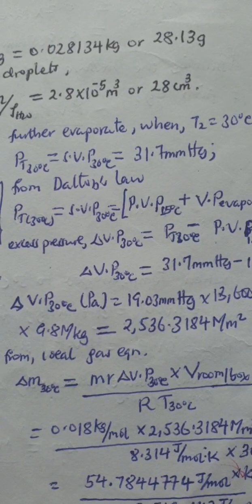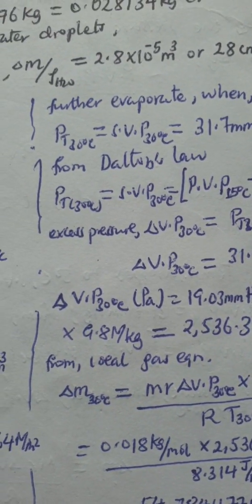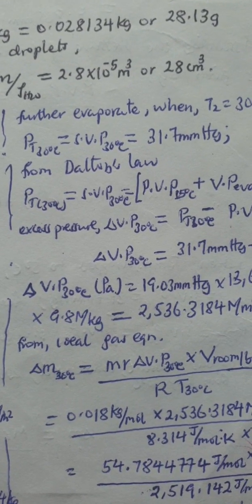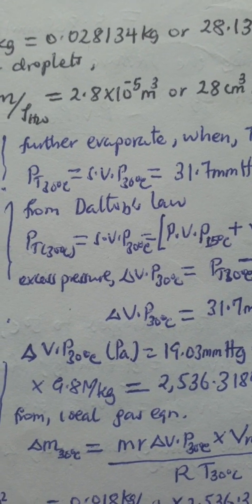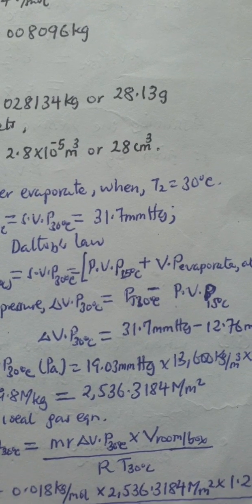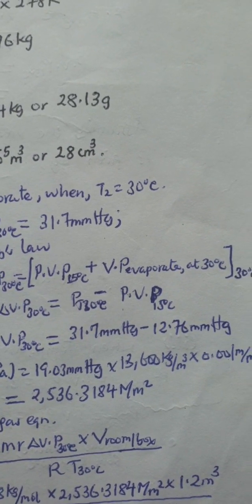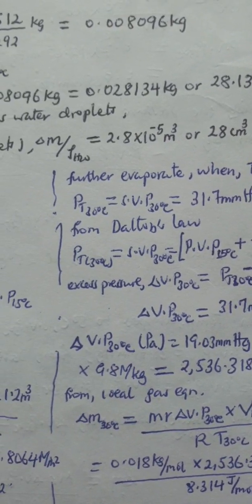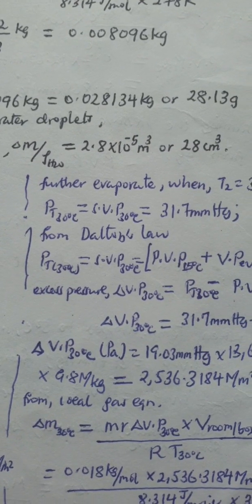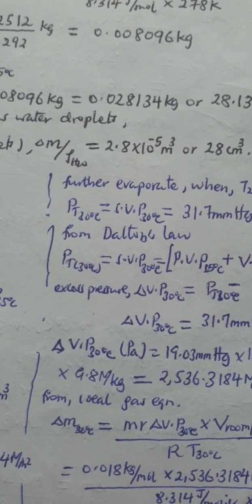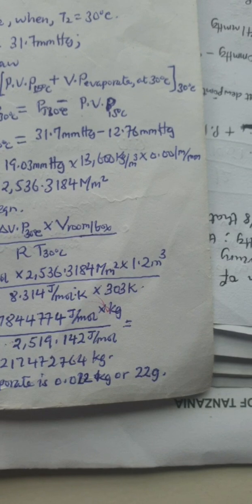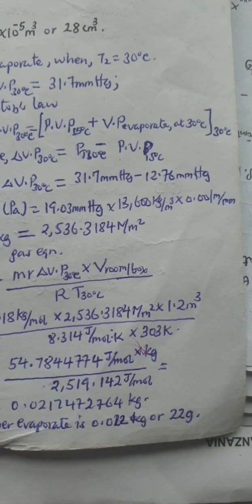When the temperature is raised to 30 degrees Celsius, the partial pressure equals the saturation vapor pressure at 30 degrees Celsius, which equals the sum of the partial vapor pressure at 15 degrees Celsius plus the excess vapor pressure when temperature rises to 30 degrees Celsius. Applying the ideal gas equation, our excess mass is approximately 0.022 kilograms or 22 grams.